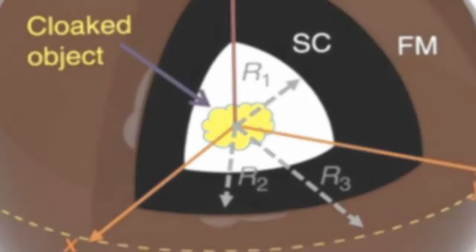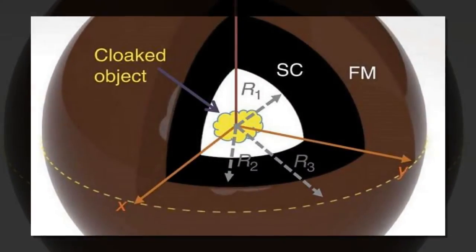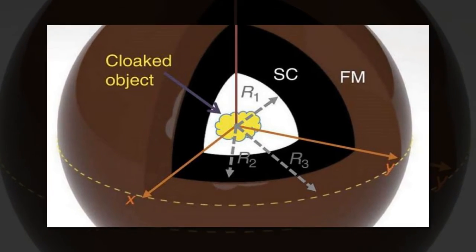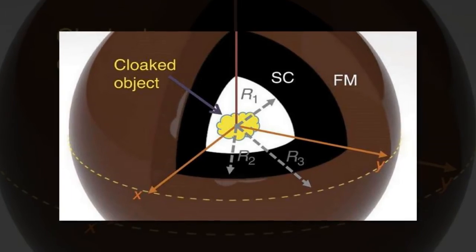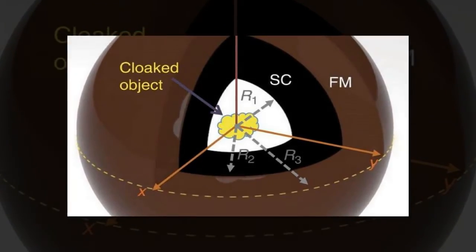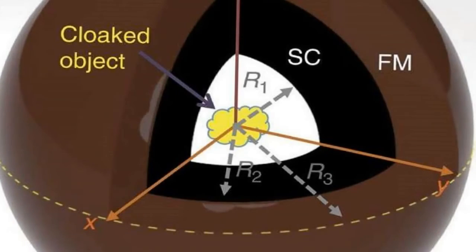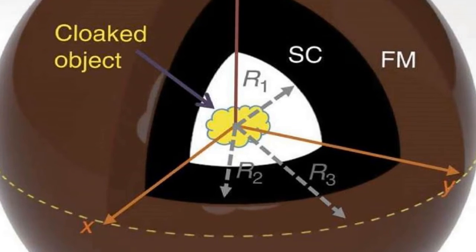In a new study, researchers have designed a 3D magnetic invisibility cloak, inside of which they placed a magnetic object, and showed that the cloaked magnet is no longer affected by nearby magnetic fields. It appears as if the cloaked magnet has become demagnetized, but in reality the magnet is simply hidden.